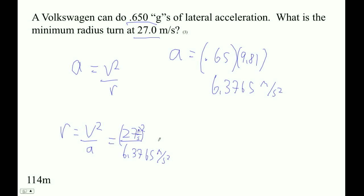27 squared divided by the answer I just got, and that's 90... Oh, I did 24 squared. 27 squared divided by 0.65 times 9.81 in parentheses. That's 114.